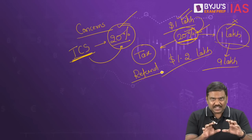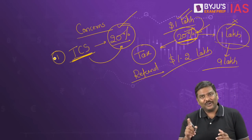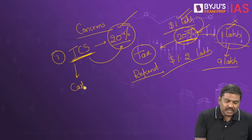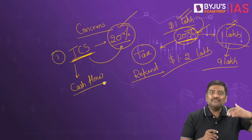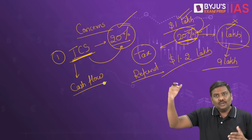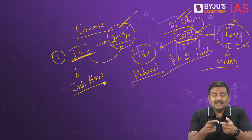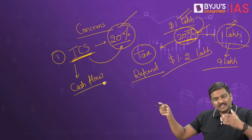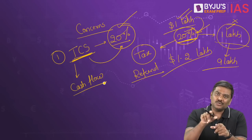So the first concern is that you will have to pay a TCS of 20%, which can cause cash flow issues. You are paying money now, and later you are supposed to get the refund or claim the deduction. But when you pay your taxes — say after 8 or 9 months — you have already paid a certain amount upfront, creating cash flow issues.